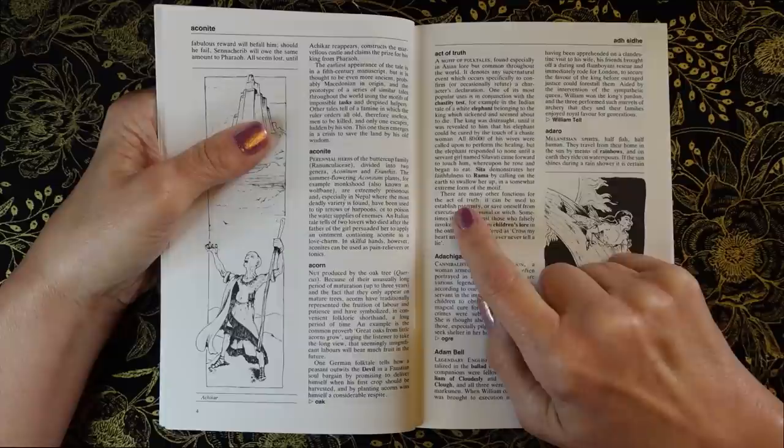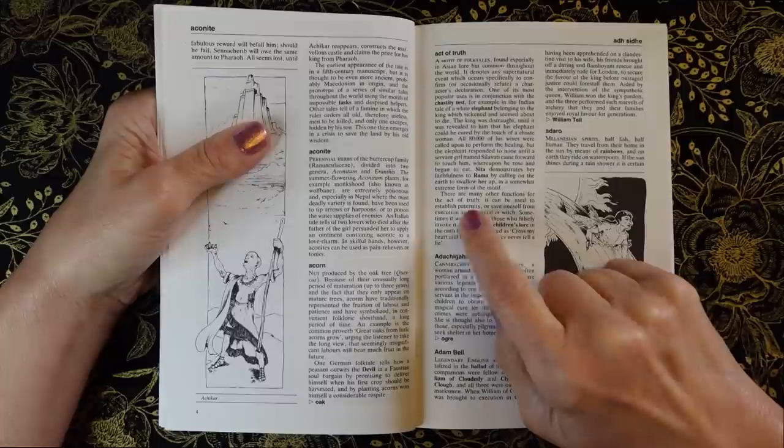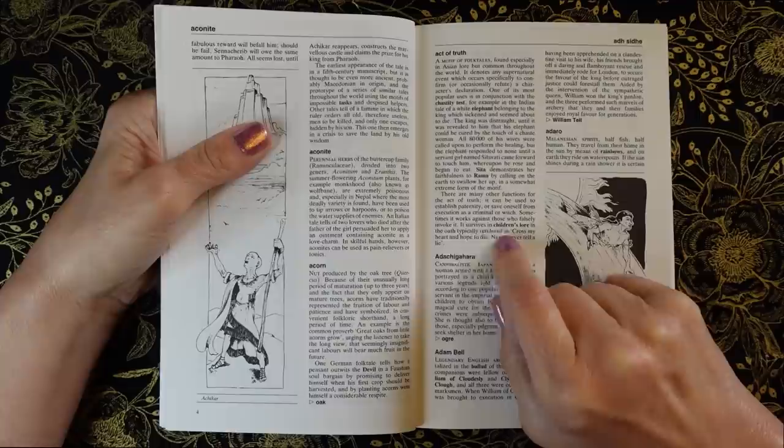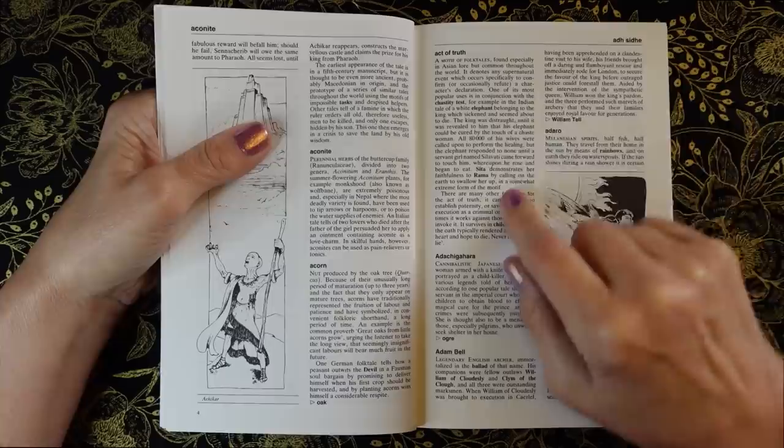Sita demonstrates her faithfulness to Rama by calling on the earth to swallow her up in a somewhat extreme form of the motif. There are many other functions for the act of truth. It can be used to establish paternity or save oneself from execution as a criminal or witch. Sometimes it works against those who falsely invoke it. It survives in children's lore in the oath typically rendered as cross my heart and hope to die, never, never tell a lie.